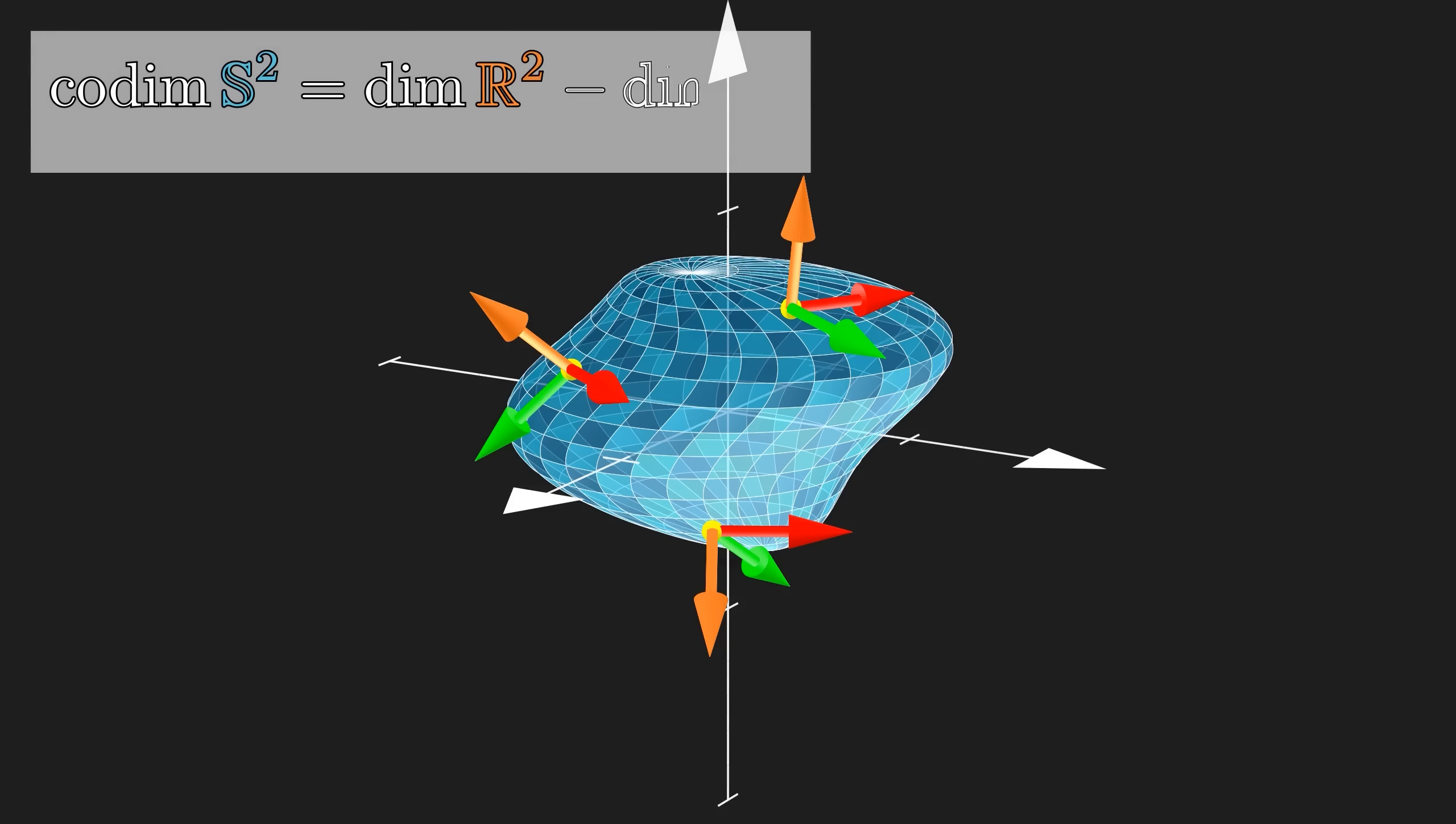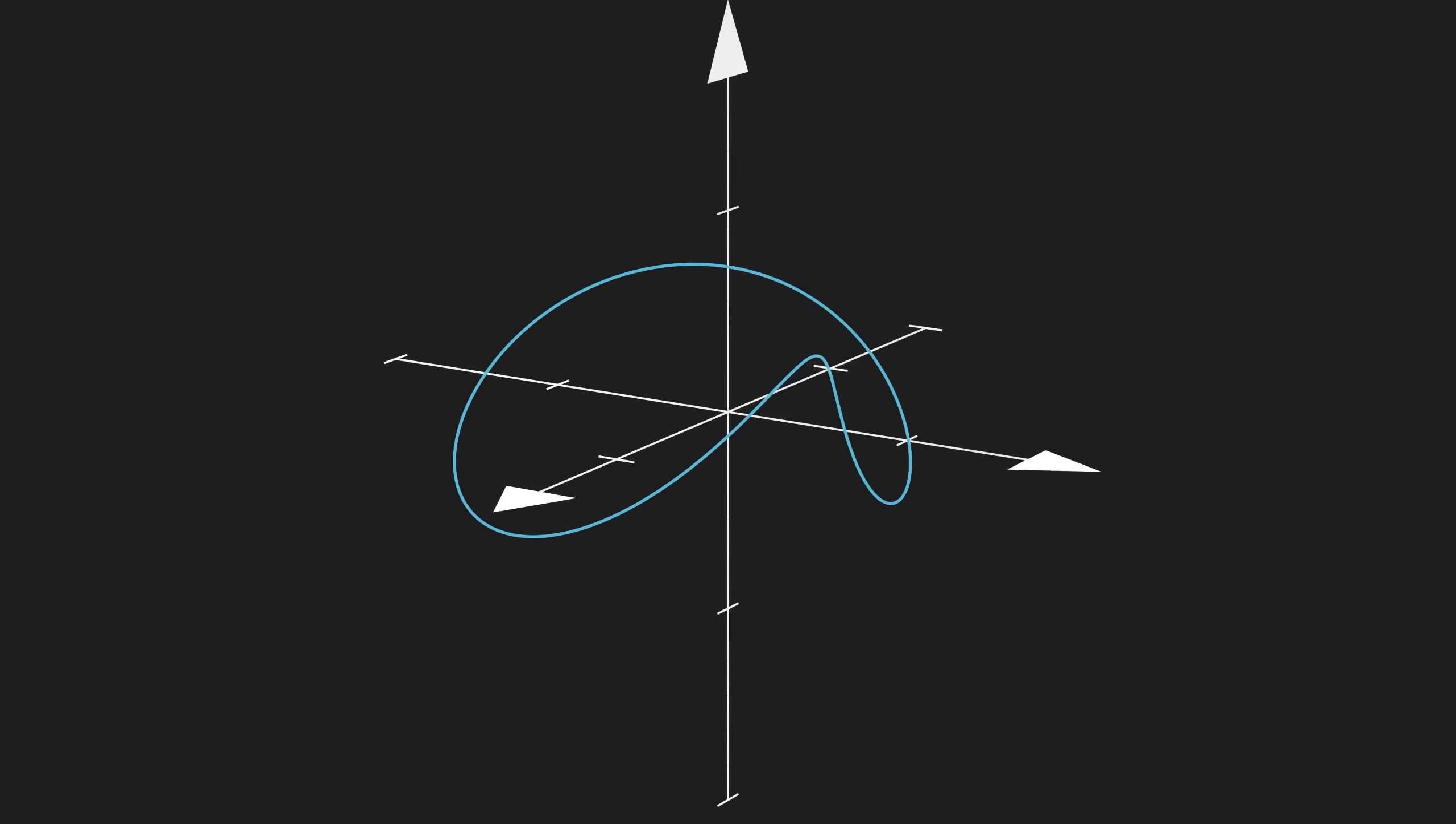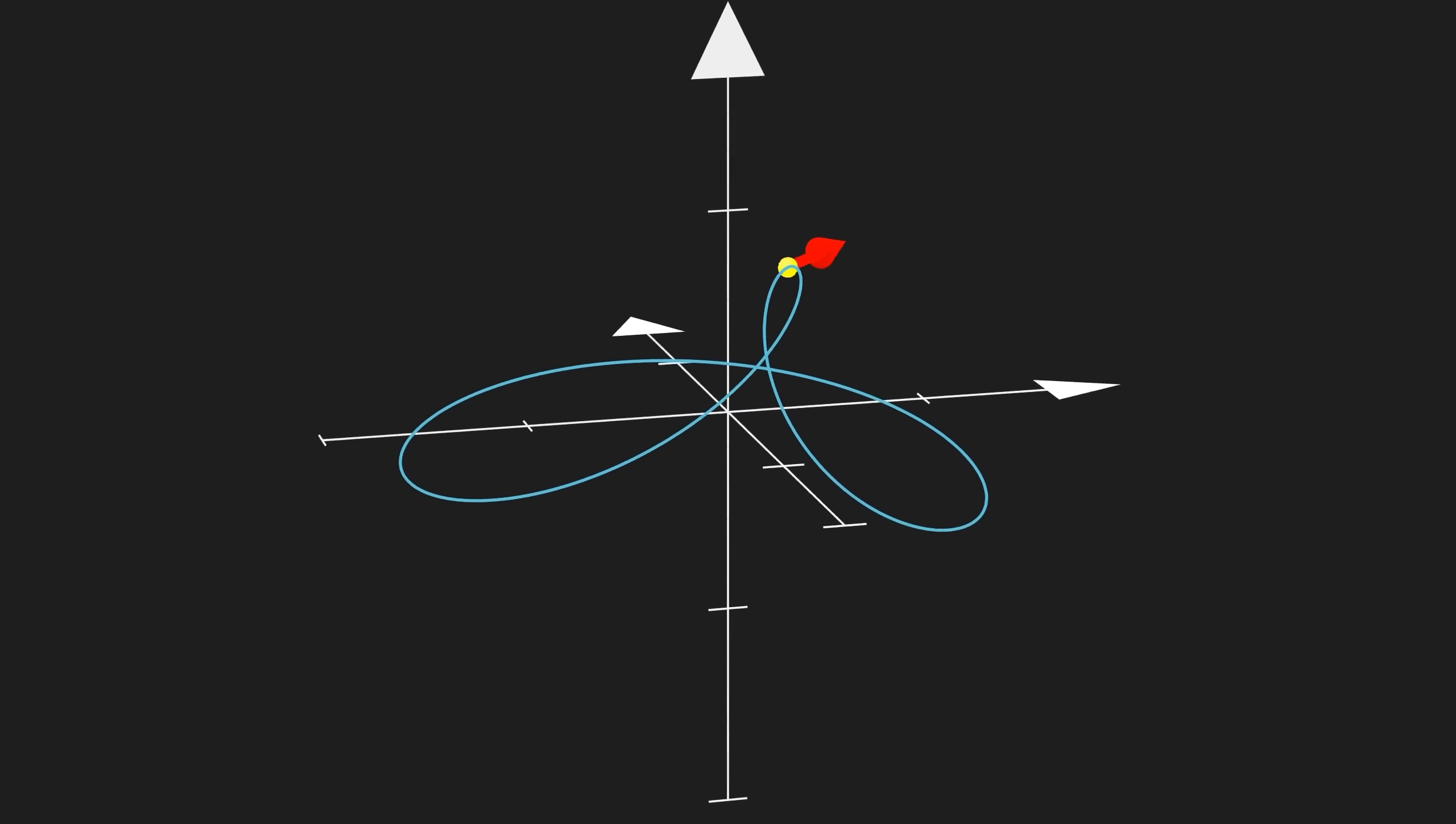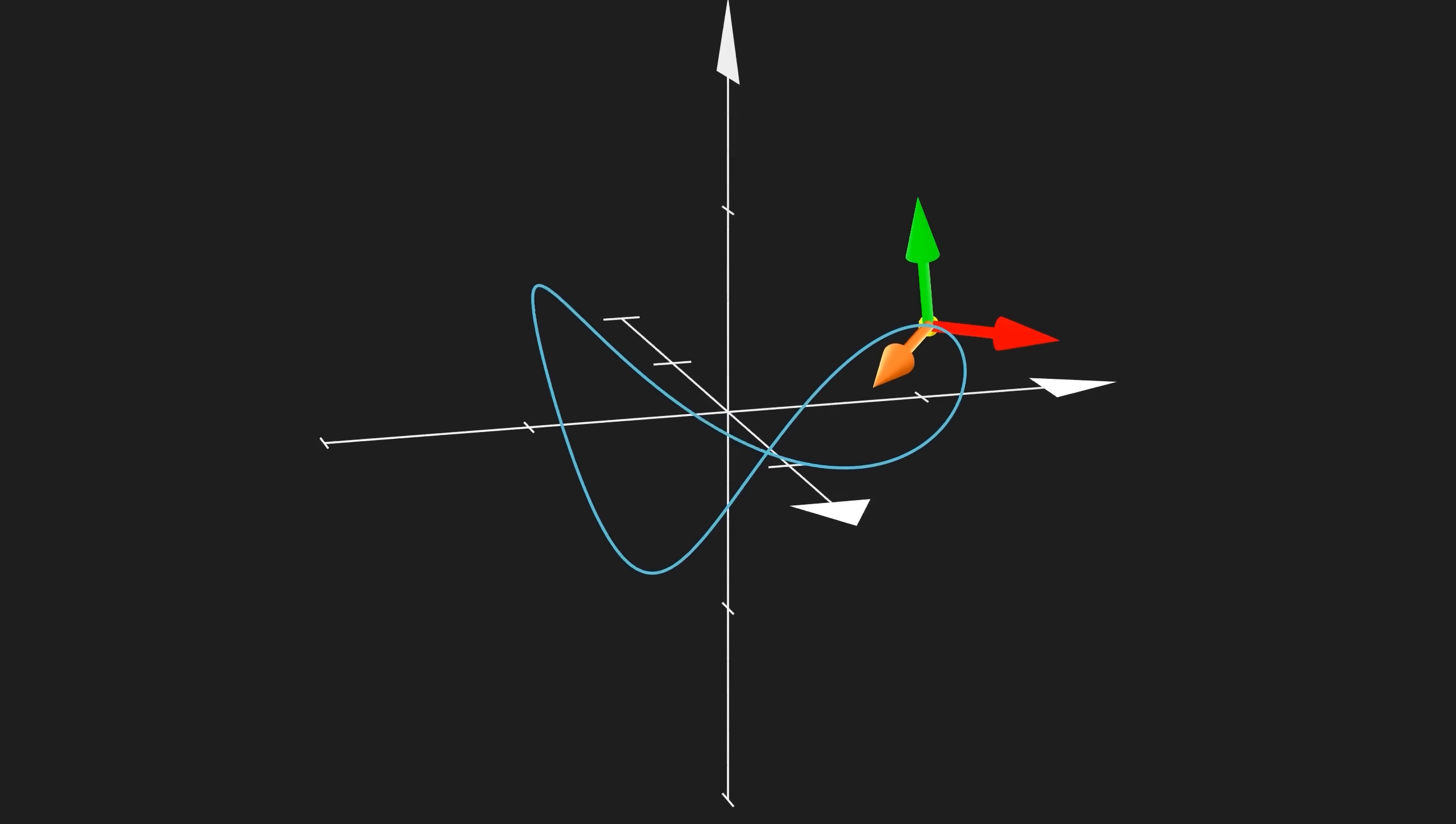In general, it's the dimension of the ambient space minus the dimension of the manifold. Now, if you have a loop embedded in R³, then you can only move in one direction, but you are aware of extra two dimensions in the ambient space, so the co-dimension of this embedding is 2.